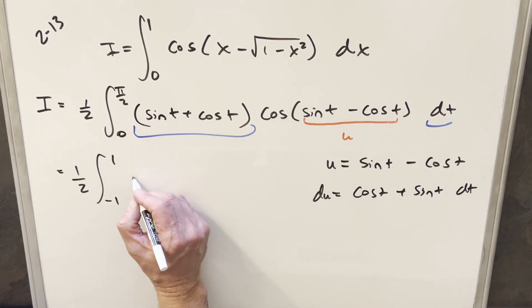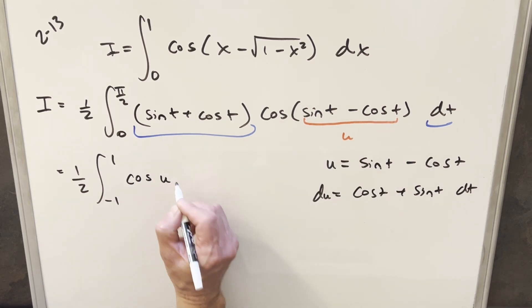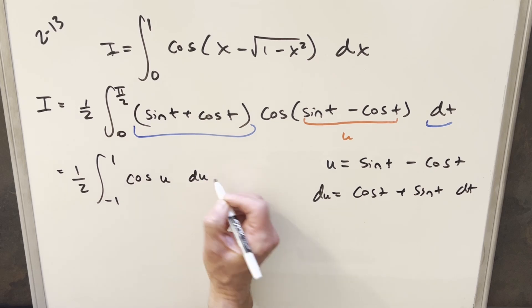And then for all this stuff, this over here is cosine u, so this whole thing is just going to simplify down to cosine u du.